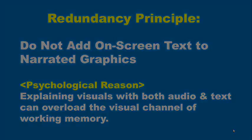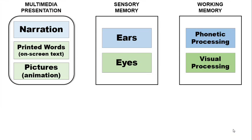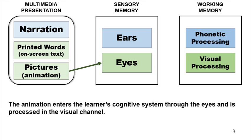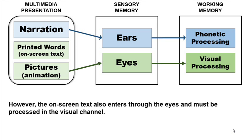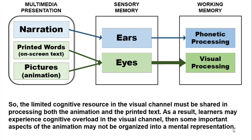Let me explain further with an example. This diagram shows the activities in the human cognitive system. The animation enters the learner's cognitive system through the eyes and is processed in the visual channel. Meanwhile, the narration enters through the ears and is processed in the auditory channel. However, the on-screen text also enters through the eyes and must be processed in the visual channel. So the limited cognitive resource in the visual channel must be shared in processing both the animation and the printed text. As a result, learners may experience cognitive overload in the visual channel.